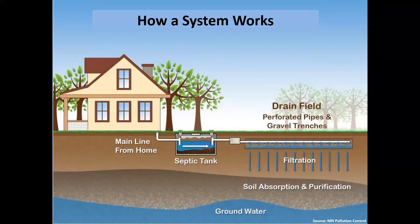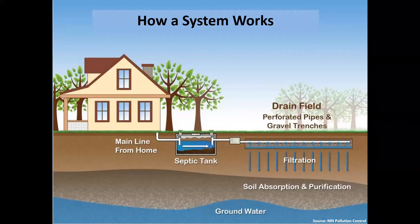Understanding the basics of how a system works can help explain the importance of maintaining your system. A conventional septic system is a relatively simple device using gravity. Wastewater flows from the house to the septic tank to allow for solid settling and wastewater storage. Then the water goes into a distribution box, which provides for equal distribution of wastewater to the various drain field trenches where the wastewater infiltrates into the soil for treatment. Note that a system is designed so that the treated wastewater will ultimately enter groundwater.